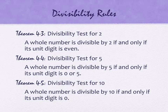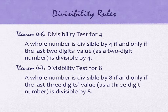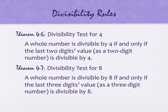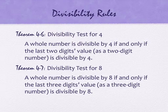The next tests are for four and eight. For four, we do not look at the last digit alone — we look at the last two digits as a whole two-digit number. If those last two digits, taken as a two-digit number, are divisible by four, then the entire number is divisible by four. For eight, we look at the last three digits.